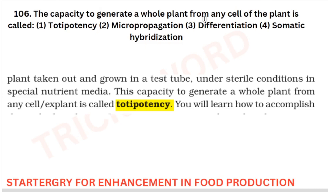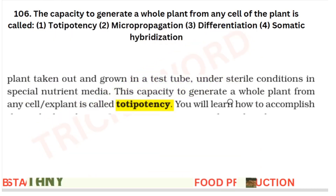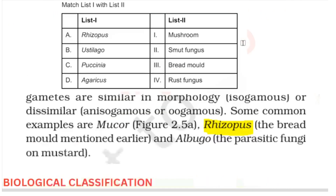The capacity to generate a whole plant from any cell of the plant is called totipotency. From which chapter is it taken? It is from your strategies for enhancement in food production. This is also a direct question — the same line appears in your NCERT: the capacity to generate a whole plant from any cell or explant is totipotency.